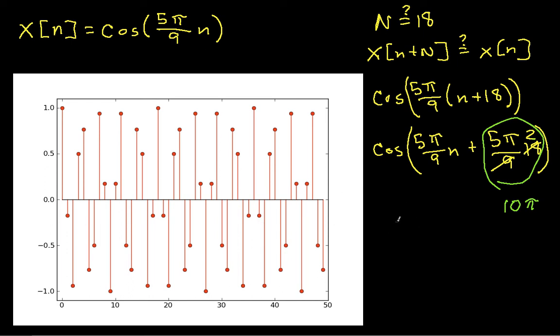Well, anytime I add an integer multiple of 2π to my argument here because the cosine is periodic with period 2π, I get the same thing. So in fact, I can say that this whole thing is equal to cos(5π/9*n). So it is periodic with period N equal to 18.